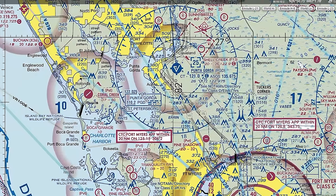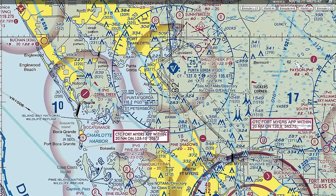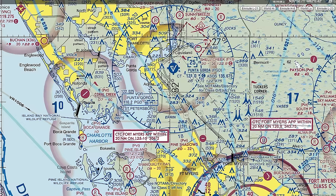Using Punta Gorda as an example, their Class D airspace goes up to 2,500 feet MSL — at 3,000 feet MSL you'd be above and clear of Class Delta. The identifier for Punta Gorda is PGD. Their control tower frequency is CT 121.0 with a star, meaning it's a part-time control tower that closes around 10 p.m. You can check tower hours of operation in the AFD — the airport facility directory — that little green booklet or on your iPad. The blue C indicates the CTAF frequency is 121.0 when the tower closes.